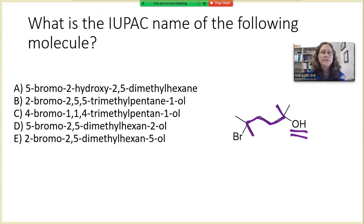So what is the longest chain? Let's number it. One, two, three, four, five, six. So the longest continuous chain that has the alcohol attached is a six carbon chain.